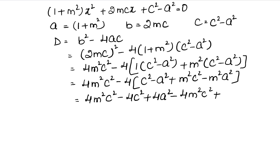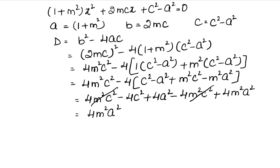Again minus plus minus toh minus 4m²c², aur minus minus plus toh plus 4m²a². Ab dekhiye — ye m²c² aur ye bhi m²c² — ye cancel ho jaate hain. Toh humara D aagya: 4m²a² - 4c² + 4a².